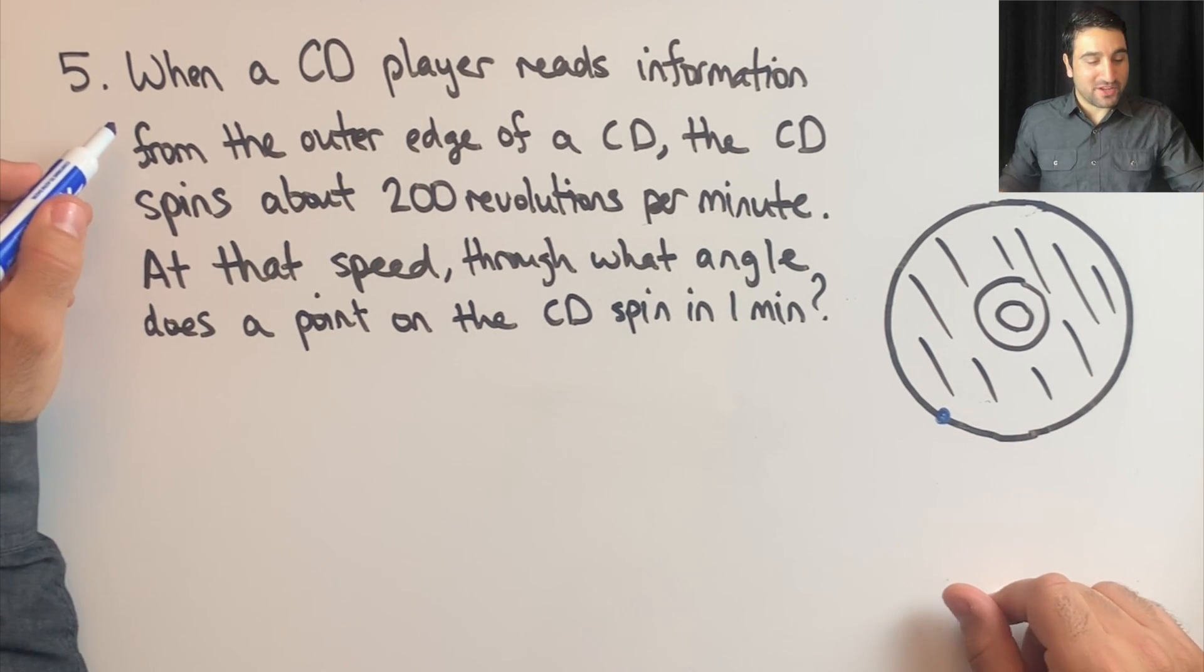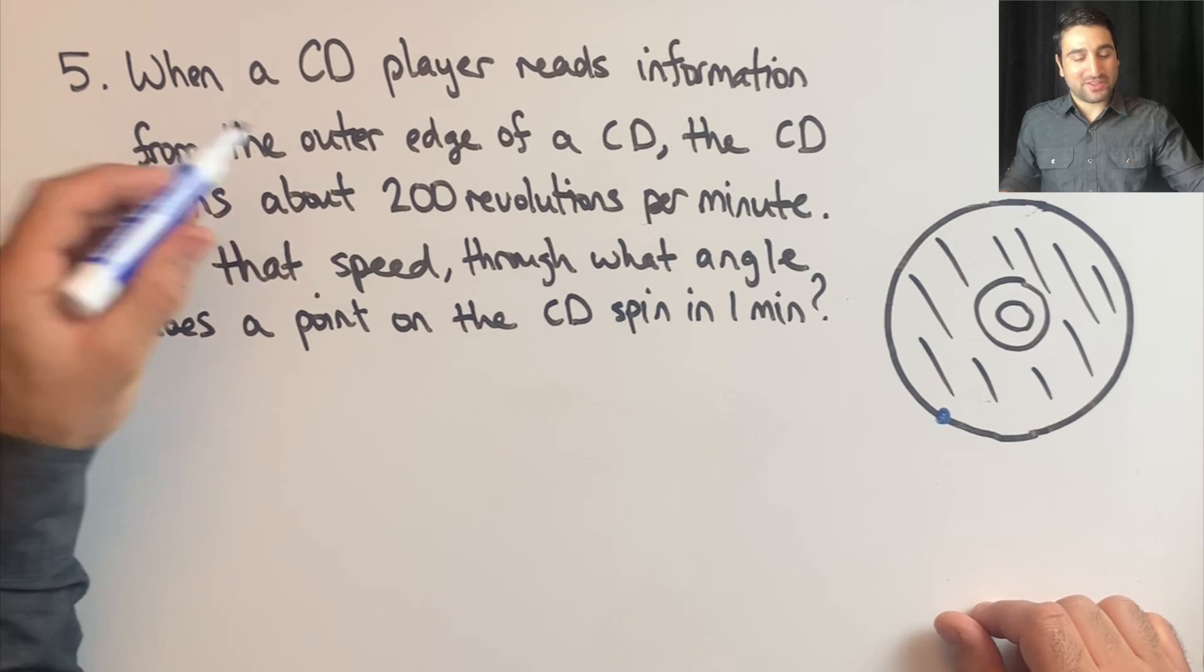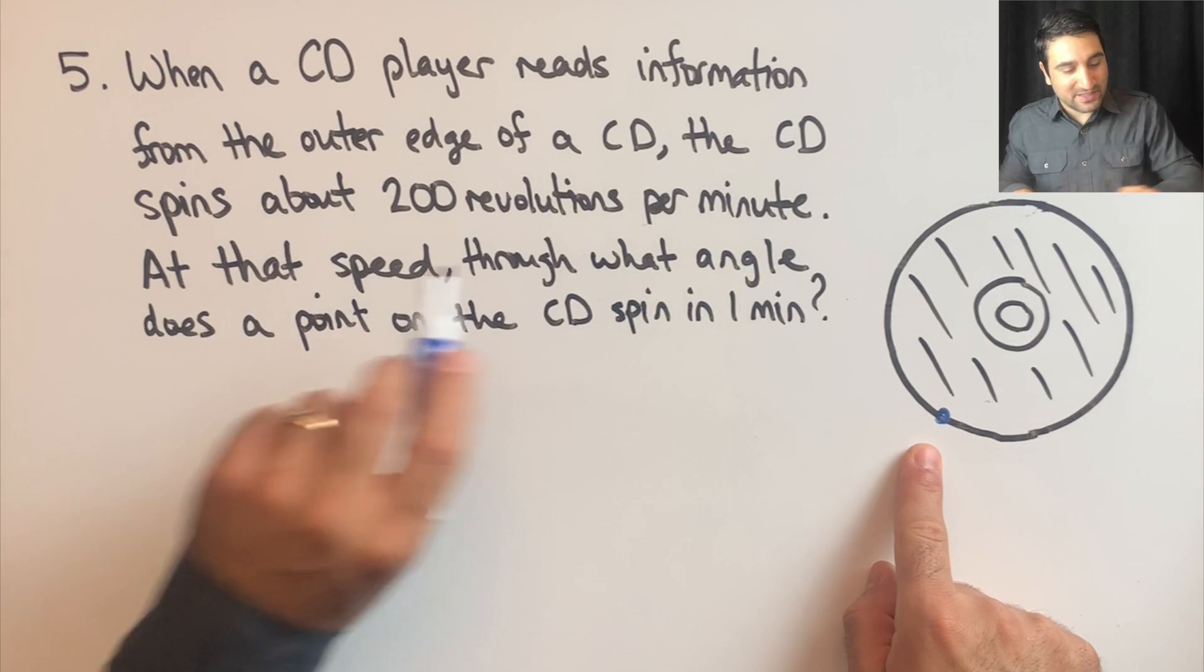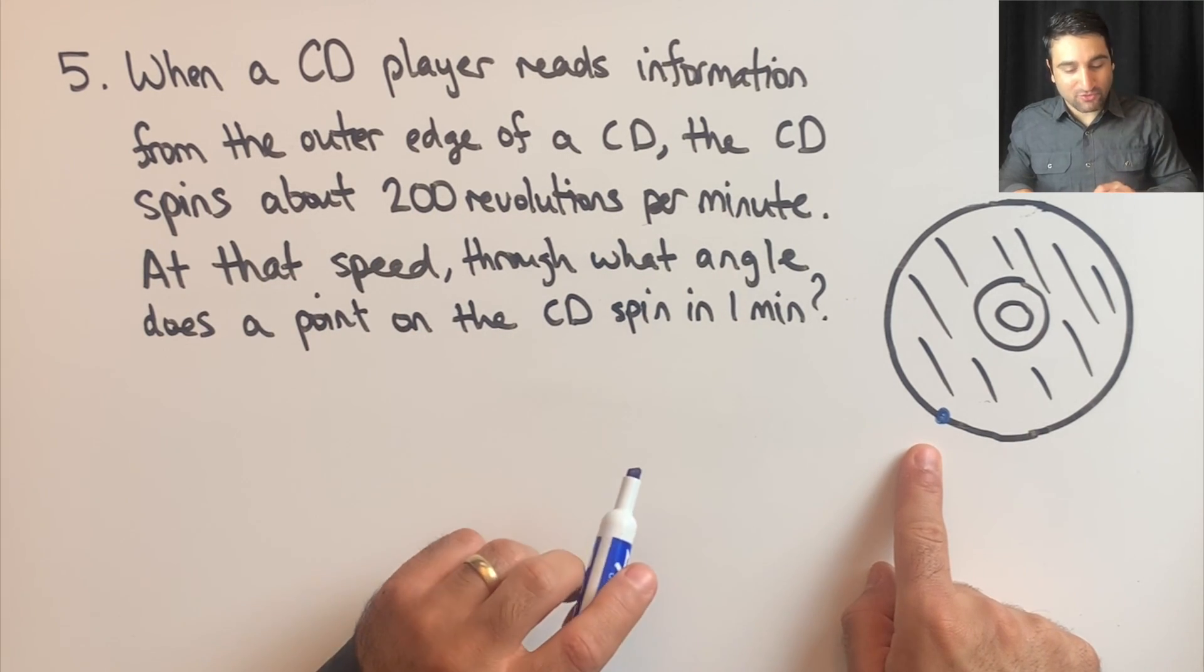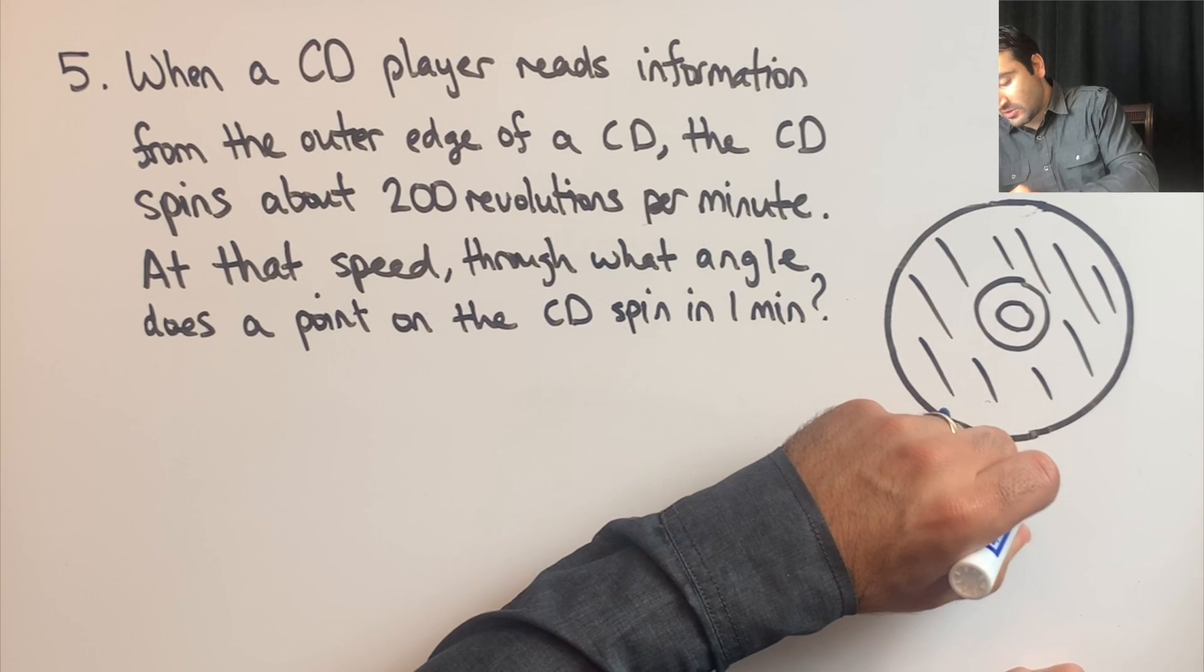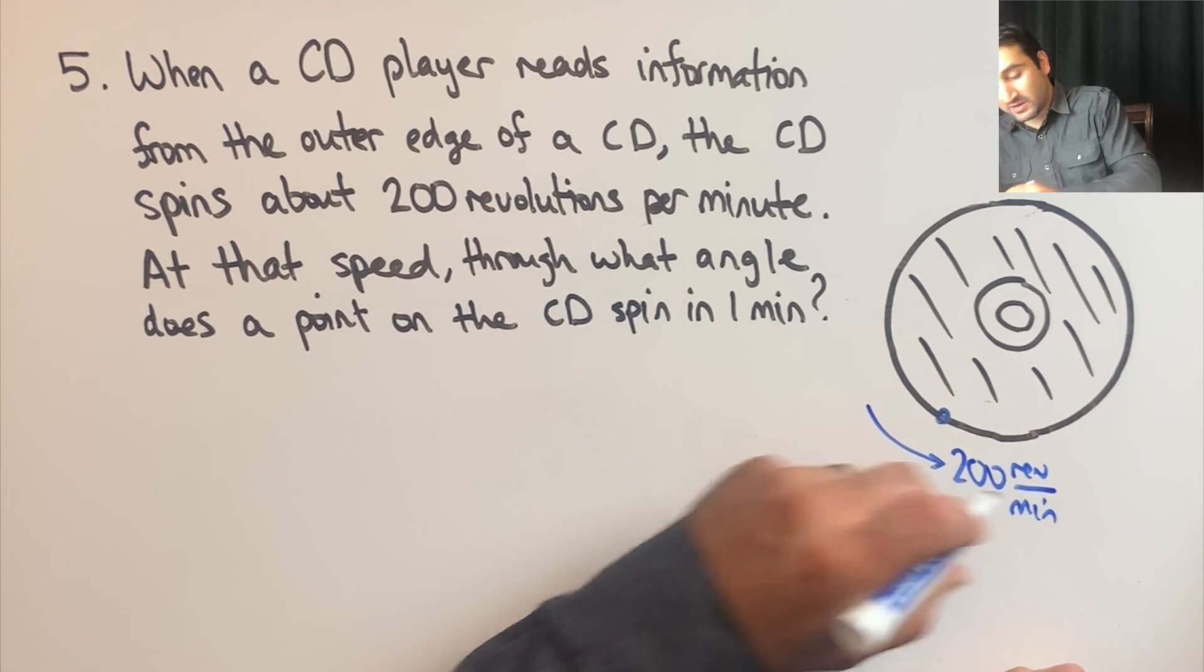This problem reads: when a CD player reads information from the outer edge of a CD, the CD spins about 200 revolutions per minute.